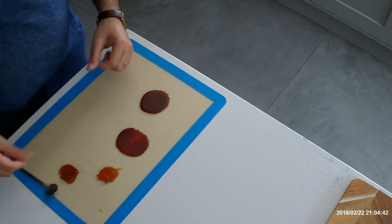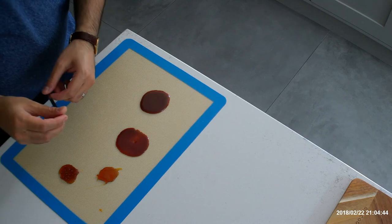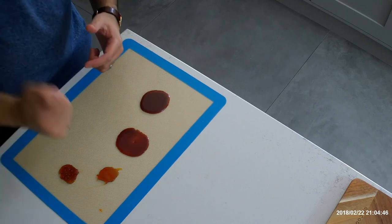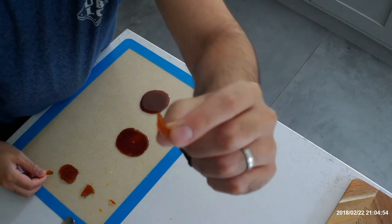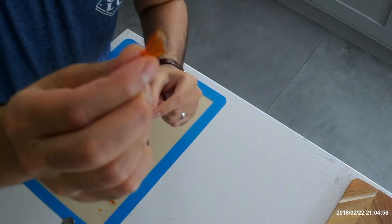So we're just going to make the shards by just stabbing them with something sharp. Got a lovely little shard there, it's going to taste very nice.